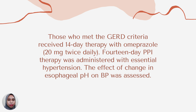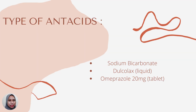Those who meet the GERD criteria may use a 14-day therapy with omeprazole 20 mg twice daily. This 14-day PPI therapy was administered for patients with essential hypertension, and the effect of change in esophageal pH on blood pressure was assessed. There are three examples of antacids: sodium bicarbonate, low-cox liquid, and omeprazole 20 mg tablet.